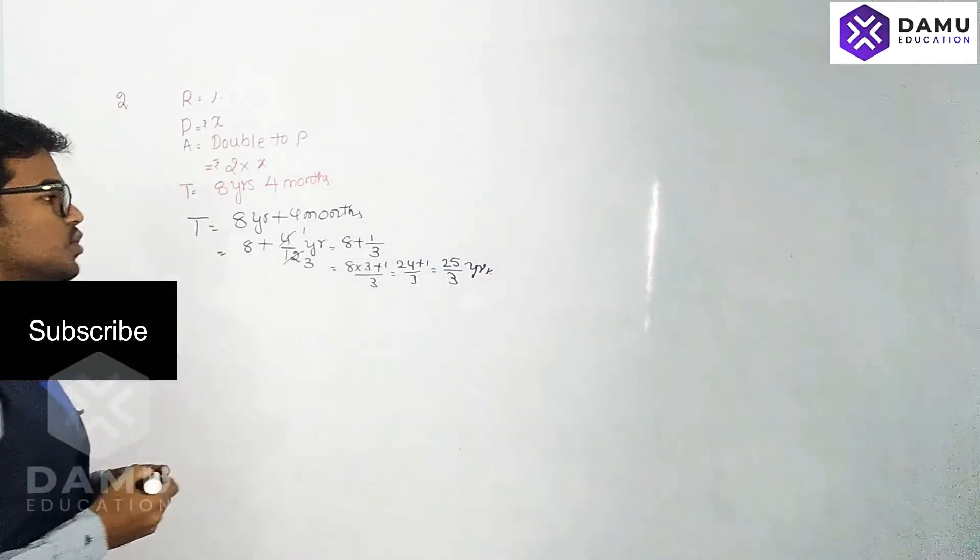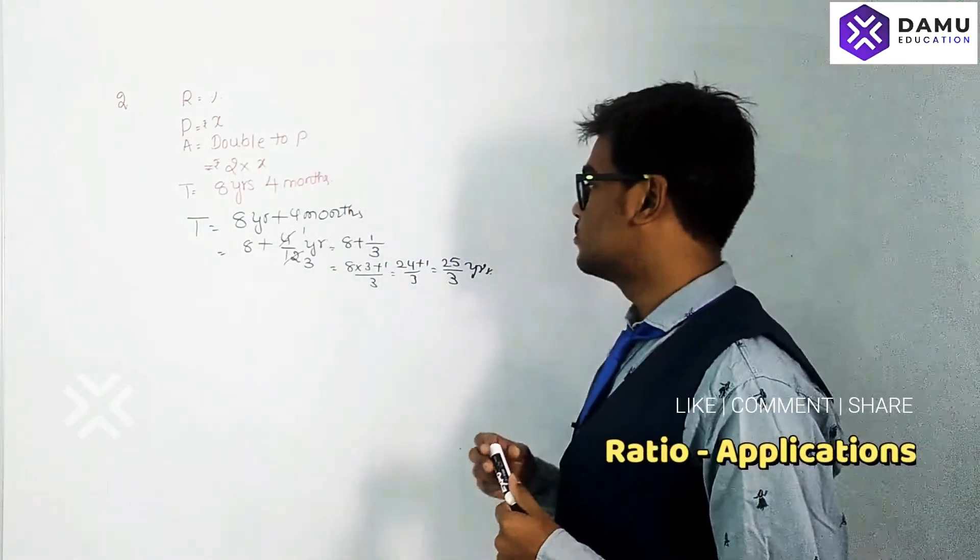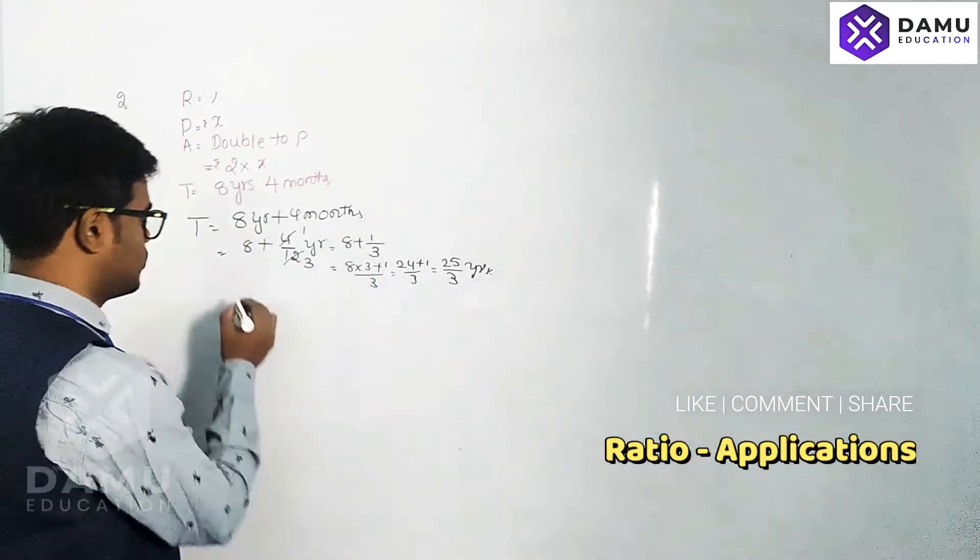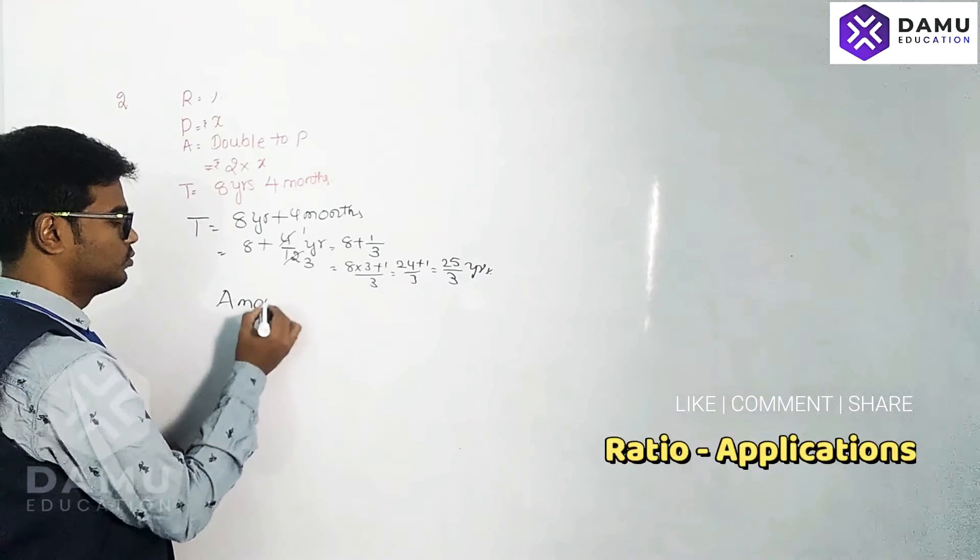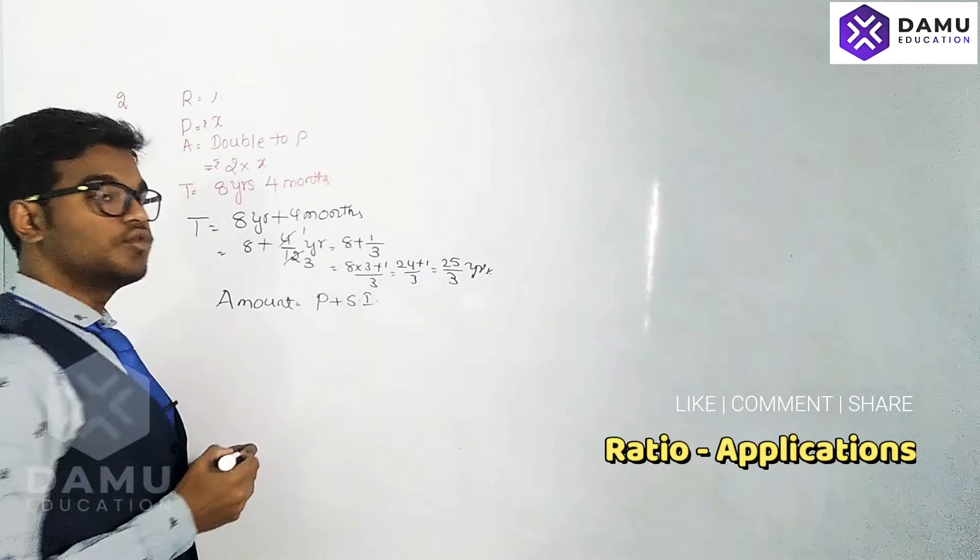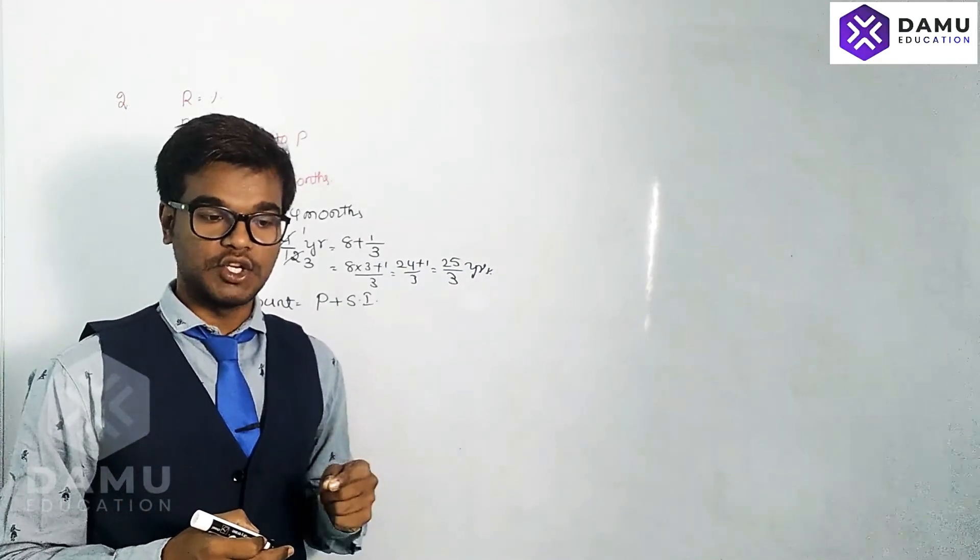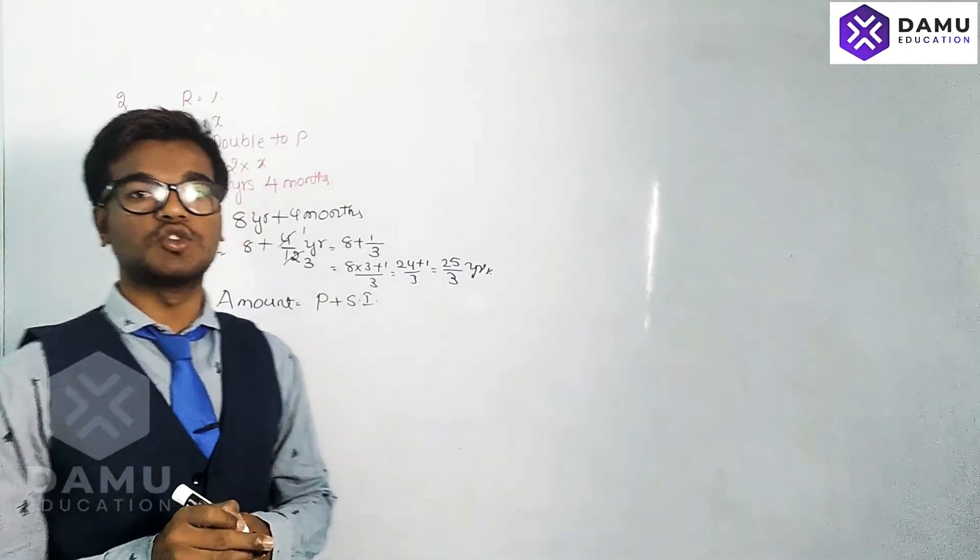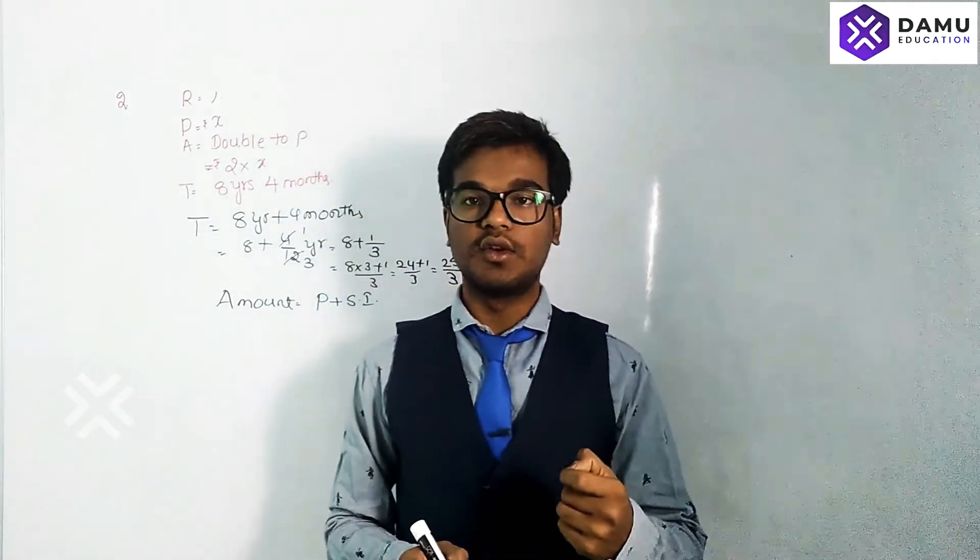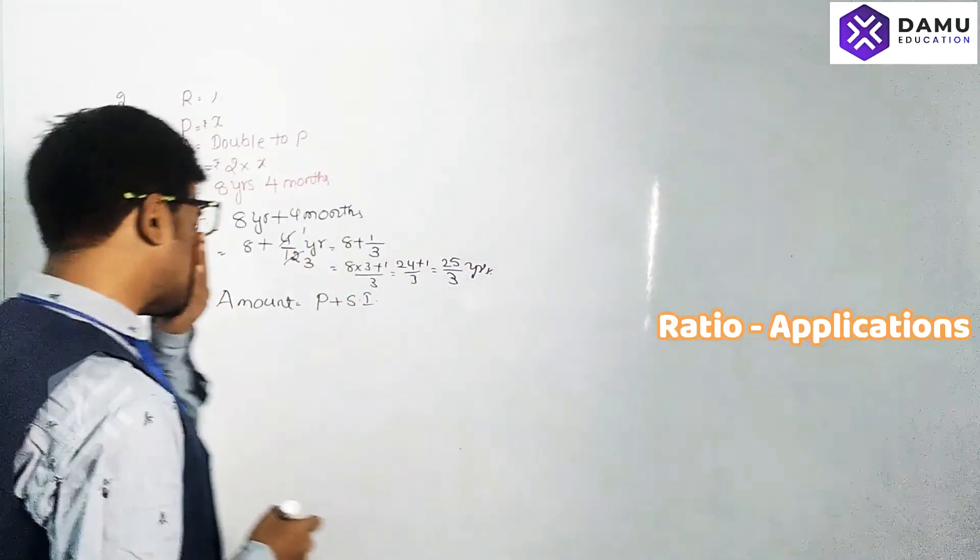Now, the amount formula is: Amount equals Principal plus Simple Interest. Before calculating the rate, we first need to calculate the simple interest, which is PTR by 100. Time period is there, R we need to find, and P we already know.